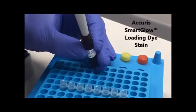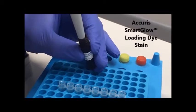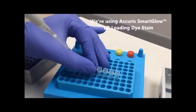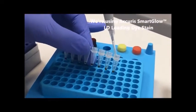For this demonstration, we are using Smart Glow Loading Dye Stain. We are going to be adding 1 microliter to each 5 microliters of DNA ladder.